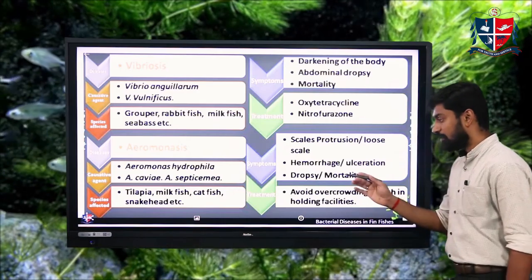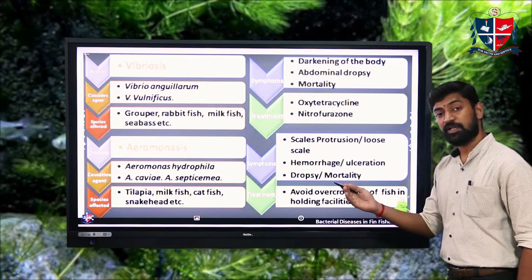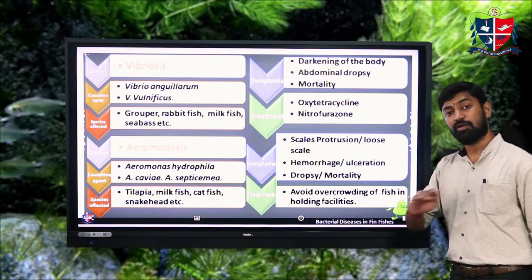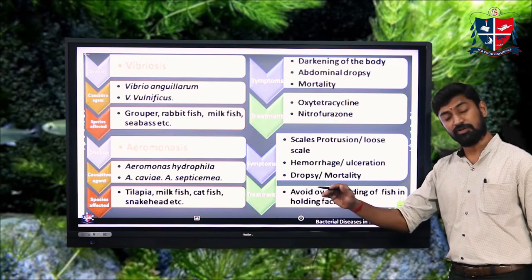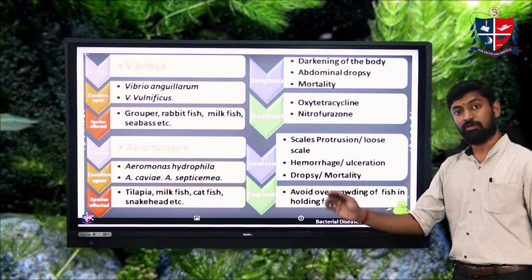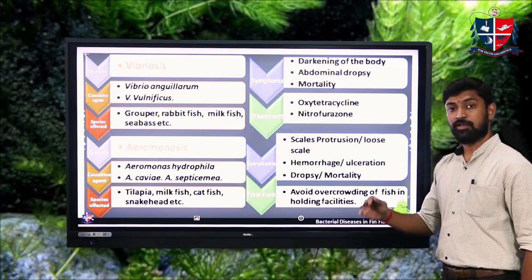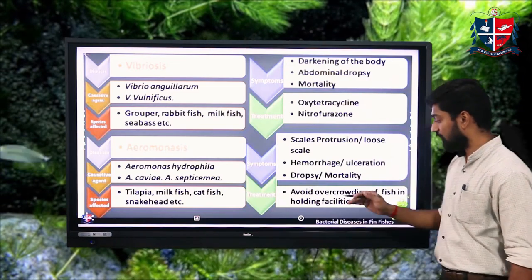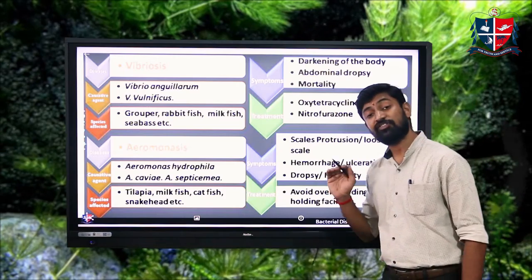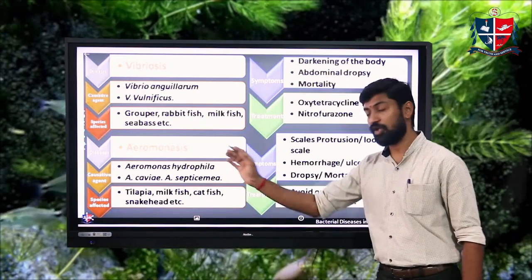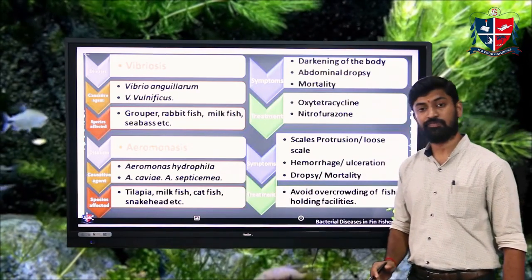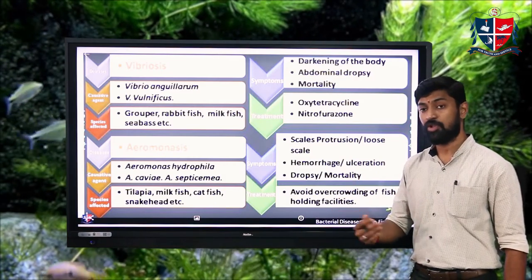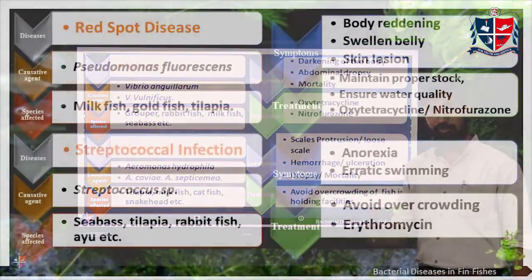To prevent aeromonasis, avoid overcrowding of fish in the pond or culture system. Antibiotics such as tetracycline and oxytetracycline are also used for treatment.